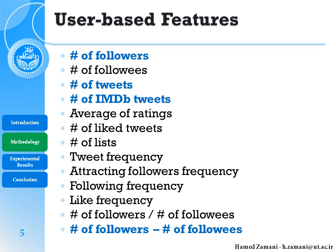In the user-based features we have several features, and four of them colored in blue are selected after backward elimination. For example, number of followers is obviously the number of followers of the user; number of tweets; number of IMDB tweets, meaning the number of tweets posted from the IMDB website; and the difference between the number of followers and the number of friends. For the others, if you are interested you can see our paper where we explain all the details.